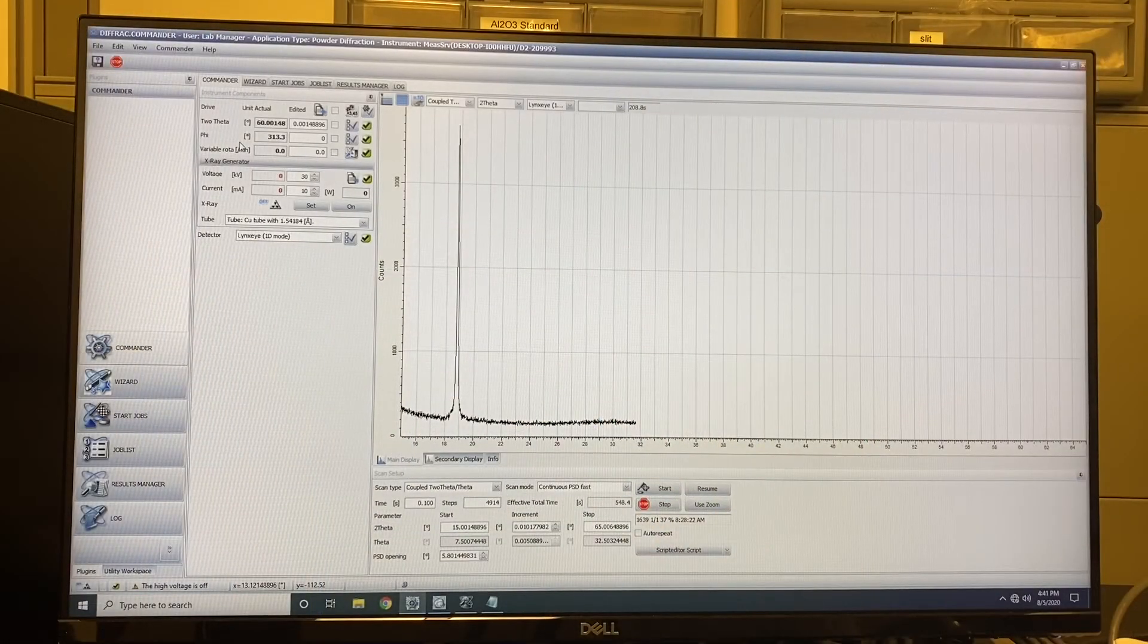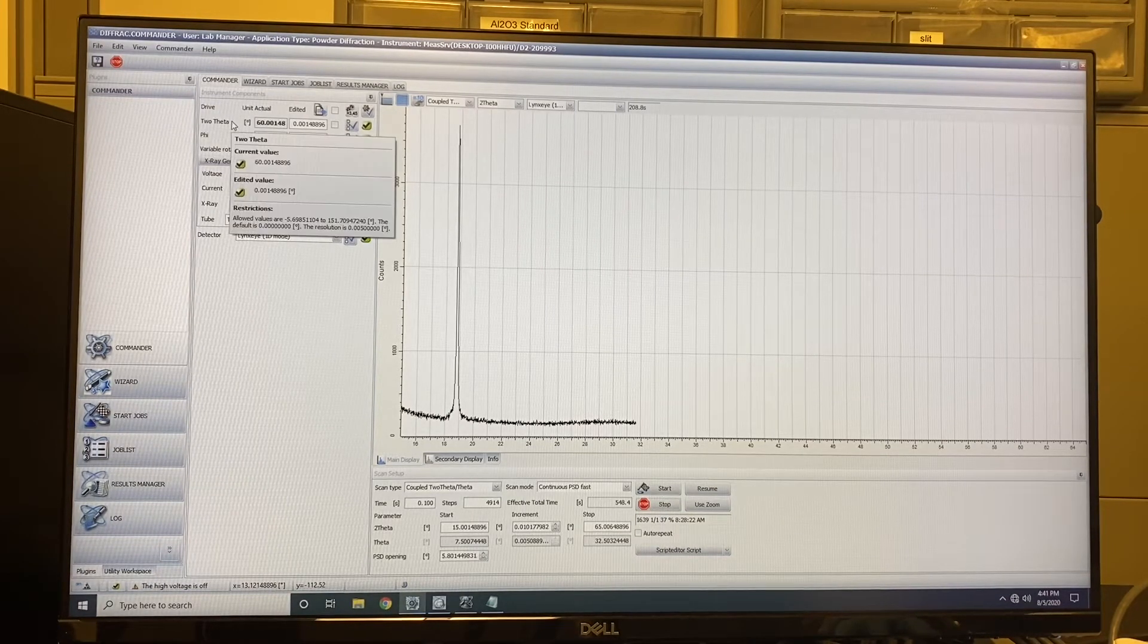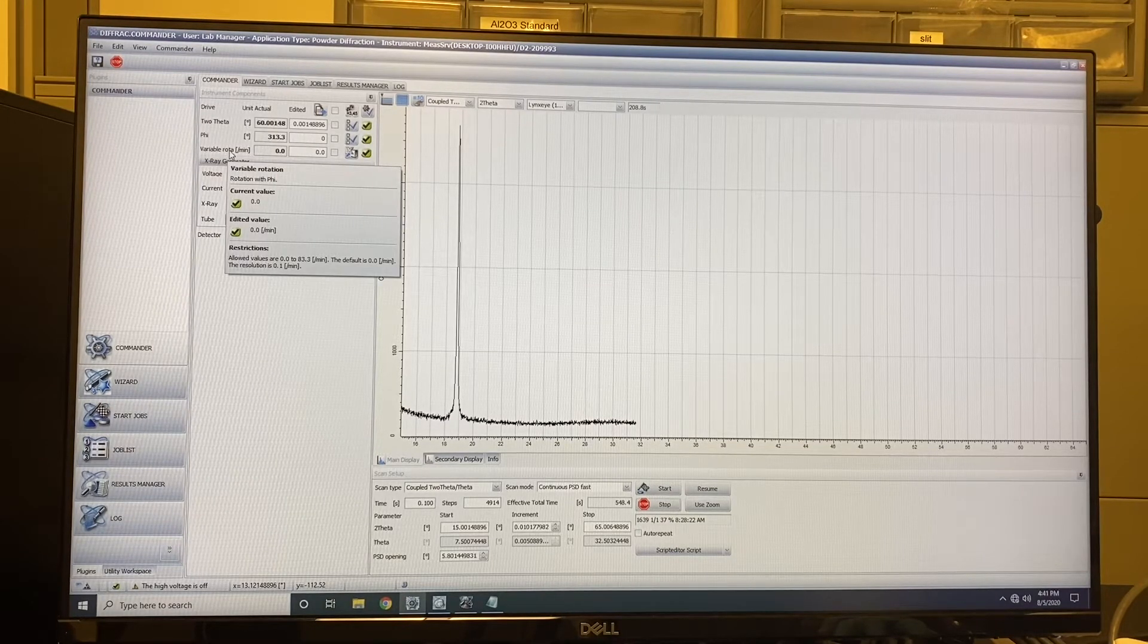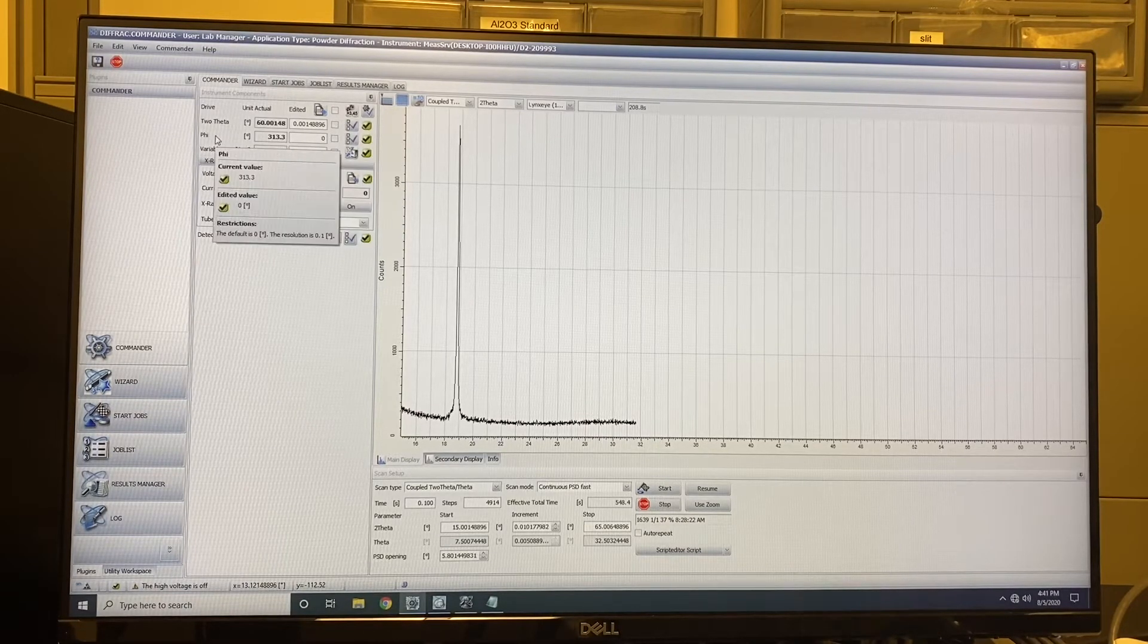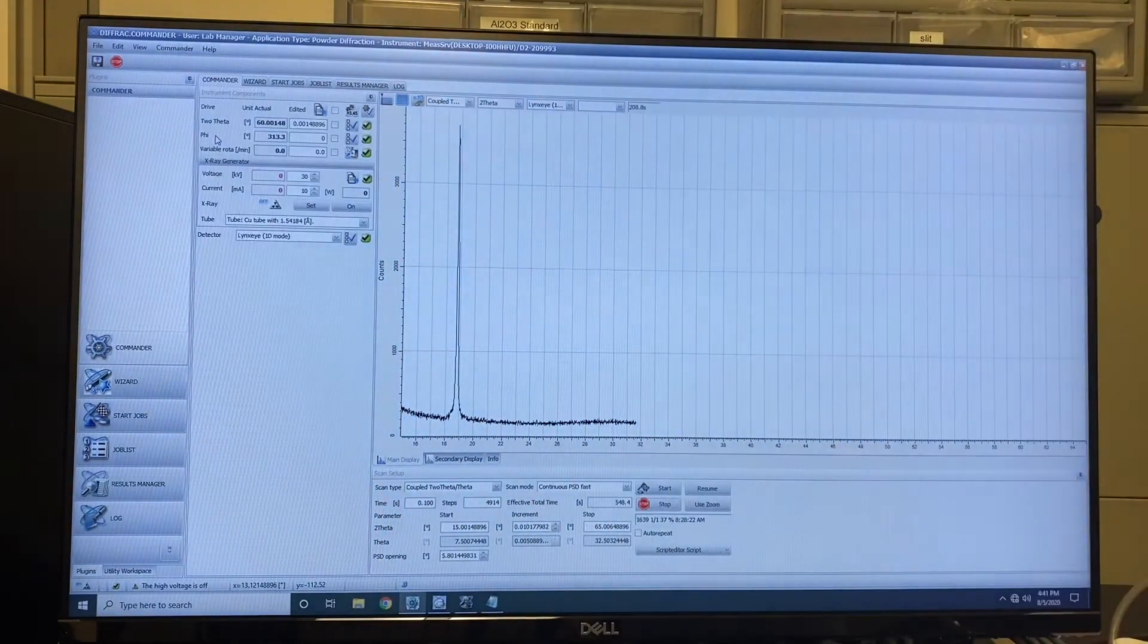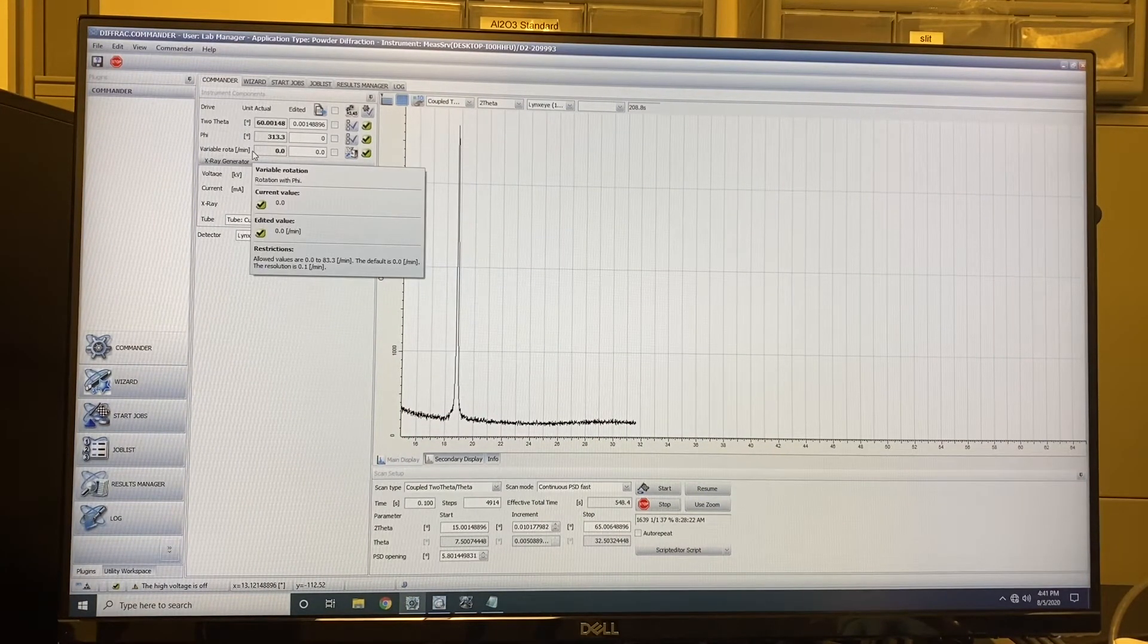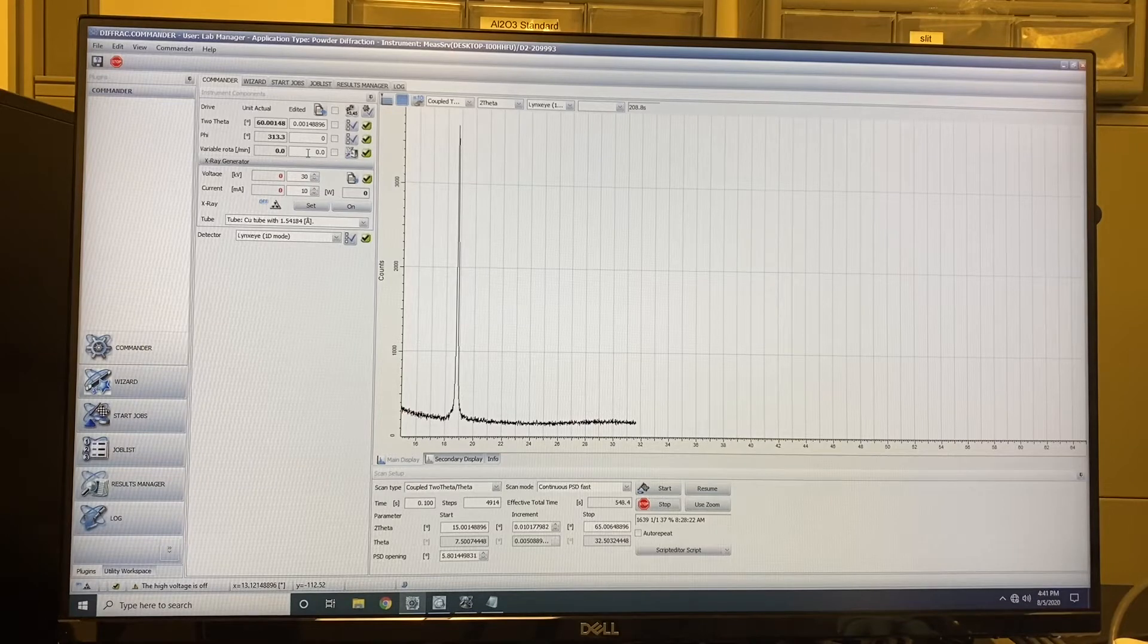Then I will introduce the interface of the measurement software. Here we can see the theta, 2θ, phi, and the variable rotation speed. The 2θ means the position of the detector. The phi means the sample can be rotated in this direction. And this is the rotated speed. And if you put your mouse here, you can see the speed minimum is 0, and maximum is 83.